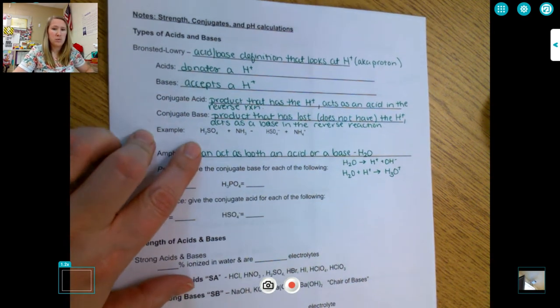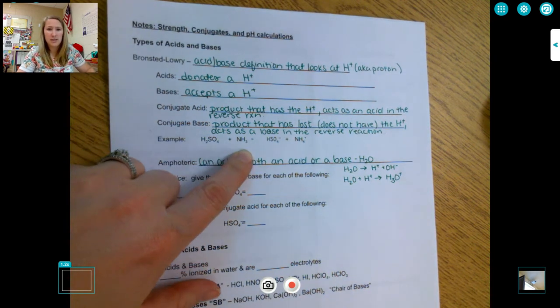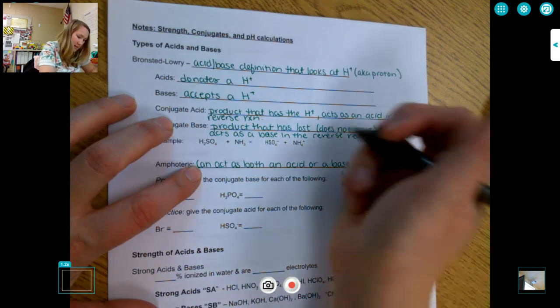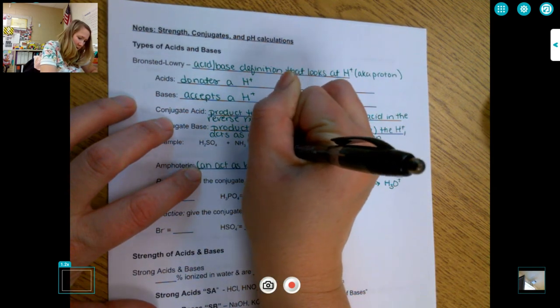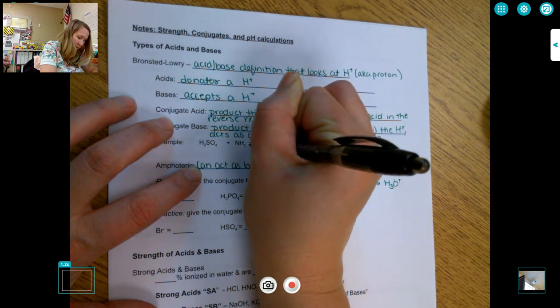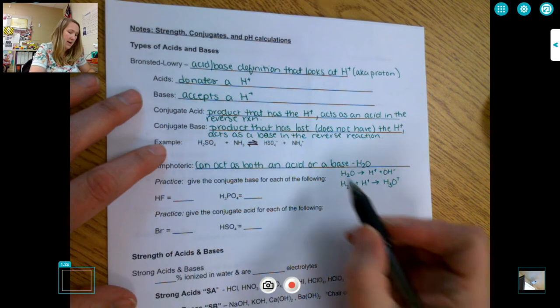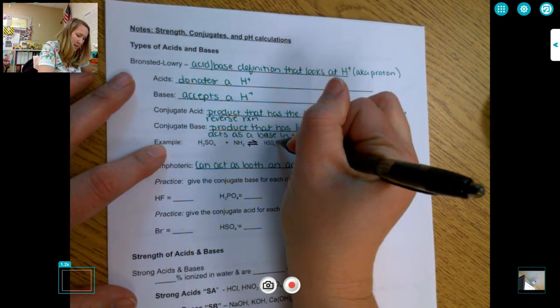So let's take a look at our example here. We have H2SO4, which we know as sulfuric acid, NH3, which is ammonia, and then we can see it. This is a double arrow because this can exist in equilibrium, which is why we do acids and bases after equilibrium. And we can see that we make HSO4 minus, and then NH4+.